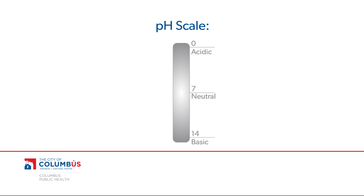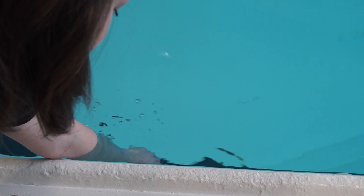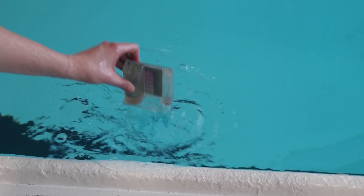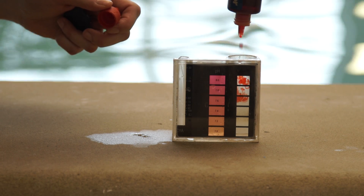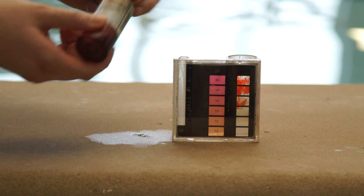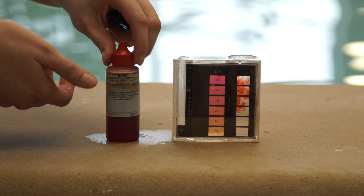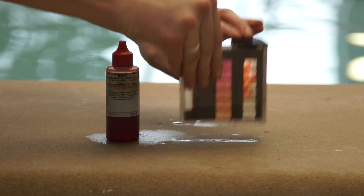The acceptable pH range for pools and spas is 7.2 to 7.8. To test the pH level, first rinse and fill the comparator, and then add the pH reagent according to the instructions in the test kit. Make sure you do not hold the bottles at an angle when adding reagents.